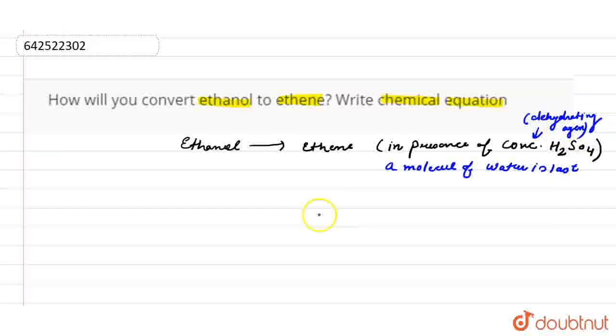If we see the reaction here, if we see ethanol, that is CH3 CH2 OH, we convert into the ethene in the presence of concentrated H2SO4 at 443 Kelvin.